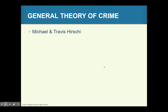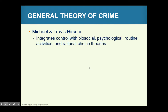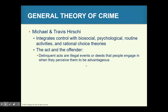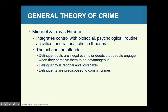The General Theory of Crime, from Gottfredson and Hirschi, looks at the act and the offender as concepts. Acts are committed when people perceive them to be advantageous — for example, offering easy short-term gratification. Delinquency is seen as rational and predictable, and delinquents are viewed as predisposed to commit crimes. Remember, these are theories — not absolute truths — and there is research supporting them, but the reality is likely somewhere in between.